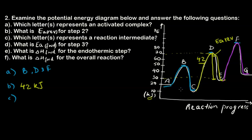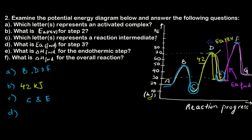Part C asks for reaction intermediates. Intermediates are formed from activated complexes but are not the final products or the initial reactants. Therefore, the answer is C and E. Part D asks for the activation energy forward for step 3. Step 3 is the pink region; forward activation energy goes from E to F. Reading the graph: F ≈ 90 kJ and E ≈ 25 kJ, so Ea(forward, step 3) = 90 − 25 = 65 kJ.